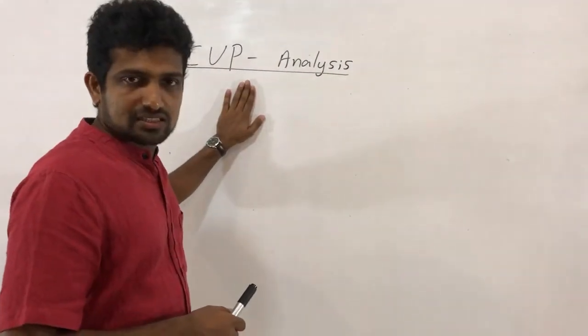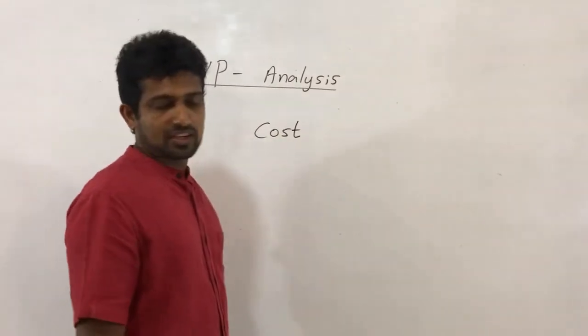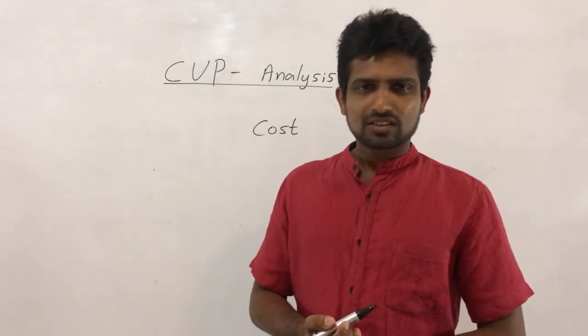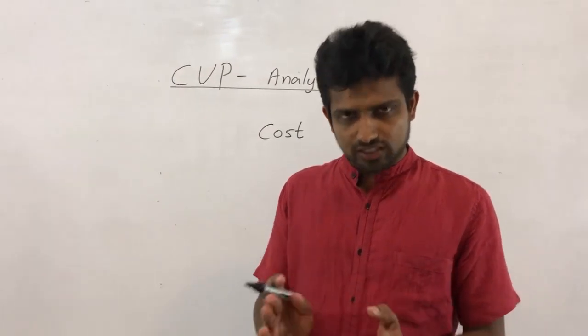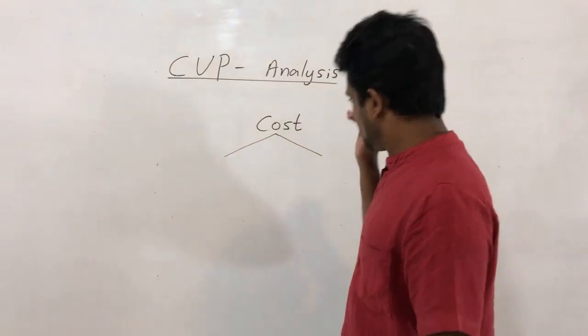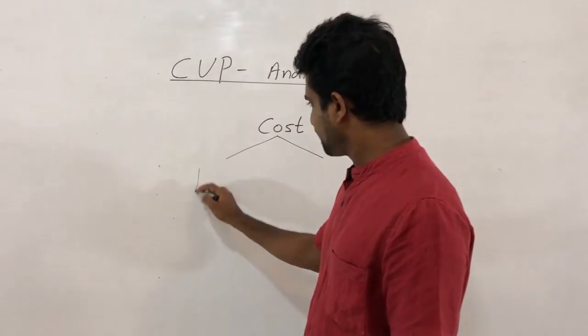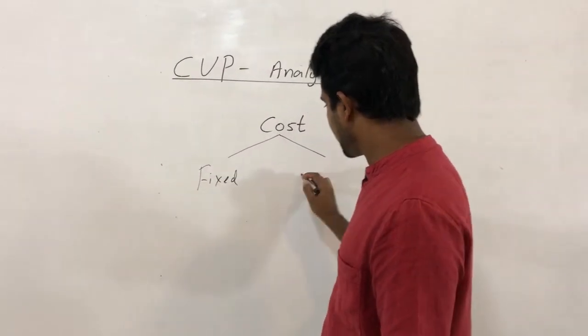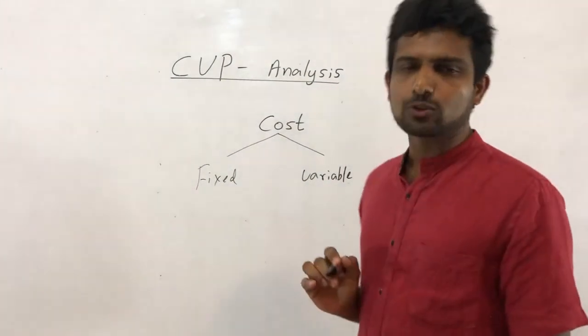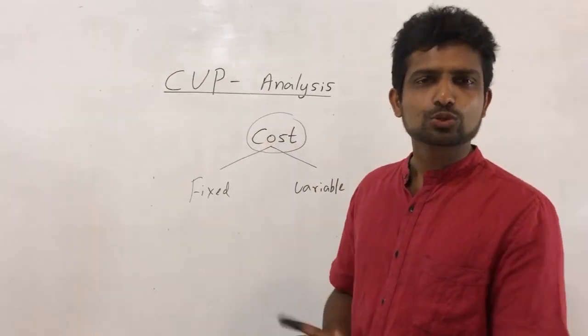You know what is cost. Cost in management accounting we are going to discuss about cost. The costs, all the costs in a firm, in a business, we can categorize in two categories: those are fixed and variable.